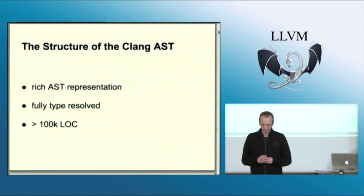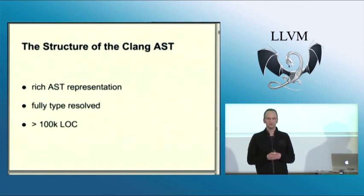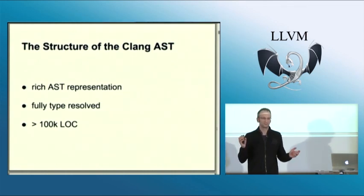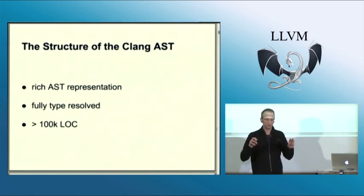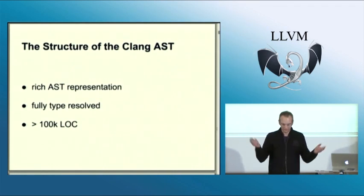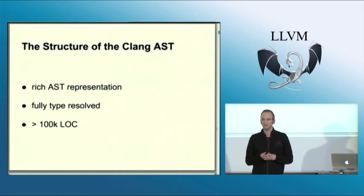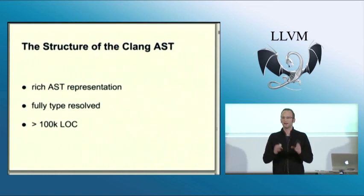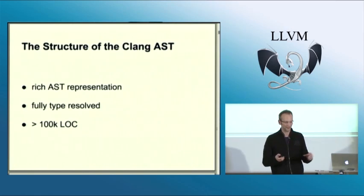Let's talk about the very basic things first. What makes Clang AST special? It's a very rich AST representation compared to what you have in other languages. You have a very accurate representation of the source locations for every node in the AST. It is also fully type resolved — it just kind of comes from C++. You cannot parse C++ without doing the type resolution, so you don't have a fast way to get a non-type-resolved AST. And it's also huge — more than 100,000 lines of C++ code, and that's just the AST, not the semantic analysis.